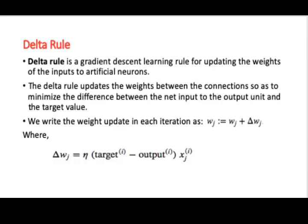So what is important to note with respect to an ADALINE neural network is the ADALINE neural network uses what is called the Delta learning rule, the Delta rule. This is a gradient descent learning rule. And this rule is basically used to update the weights of the inputs to the artificial neurons. So this rule basically works like this: it will update the weight between the connections so that it will minimize the difference between the net input to the output and the target value.